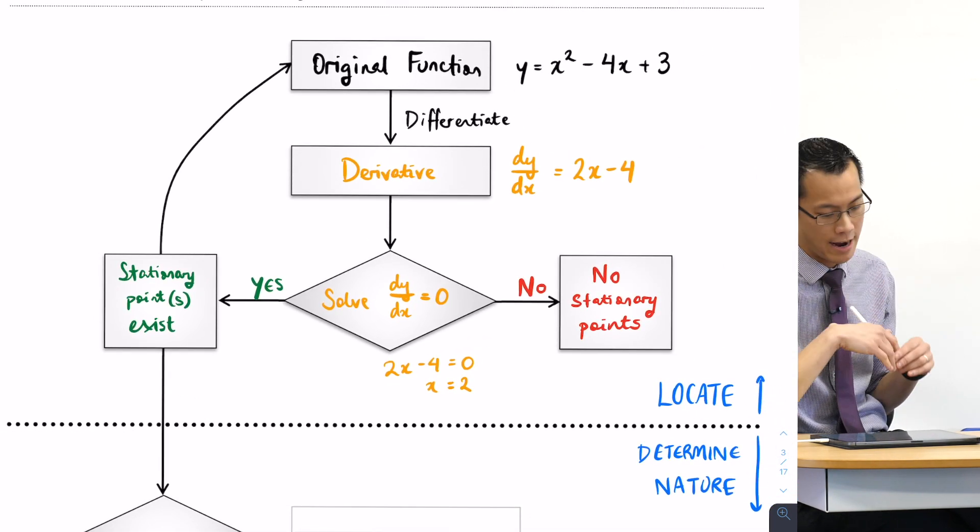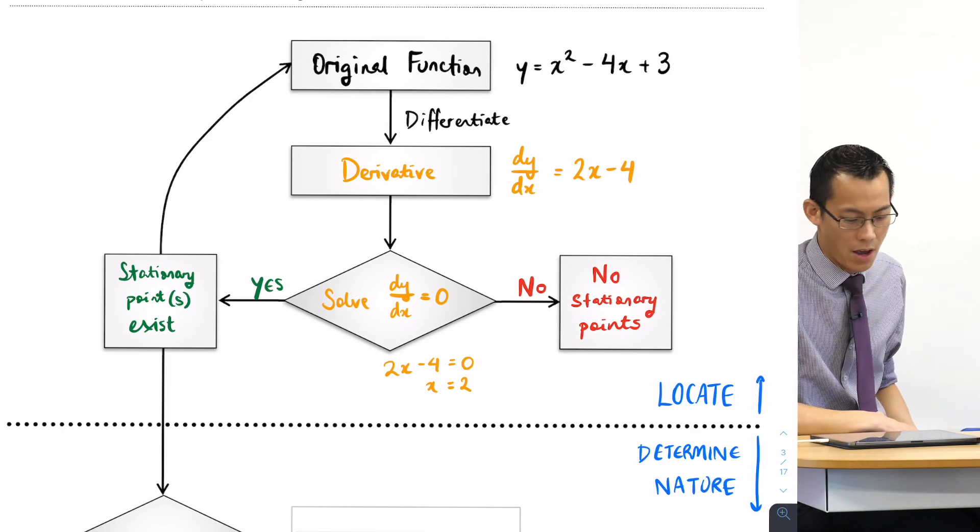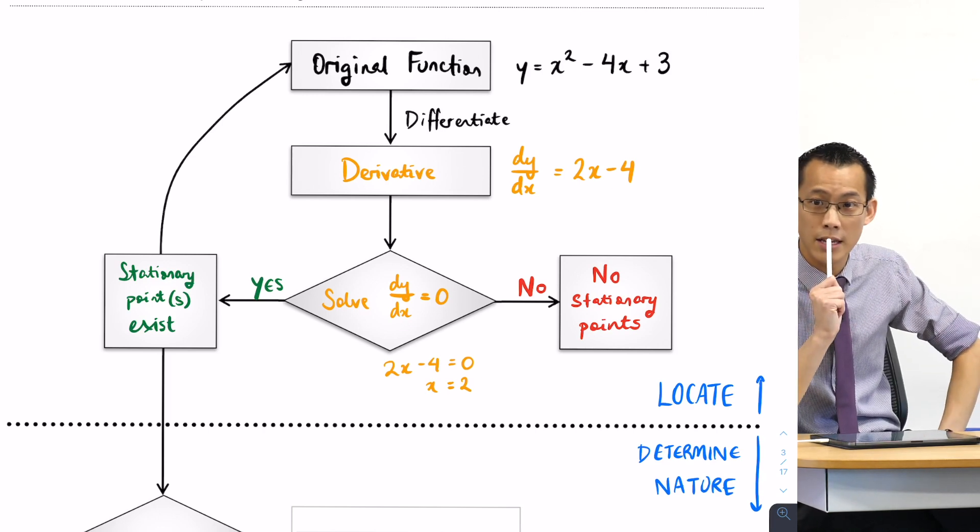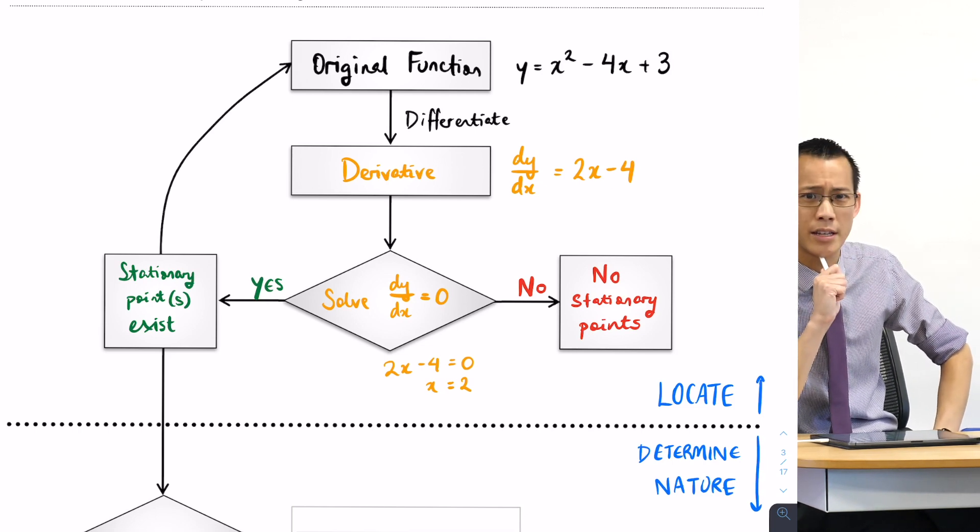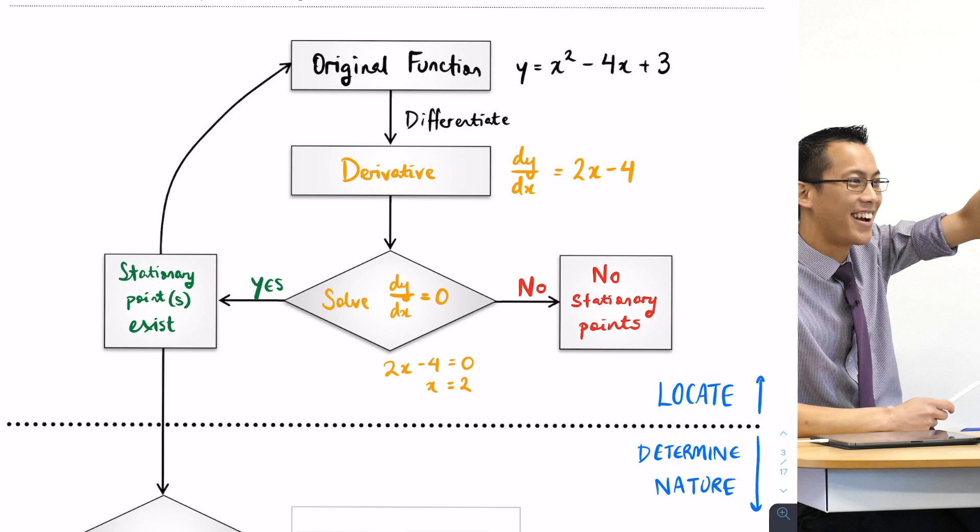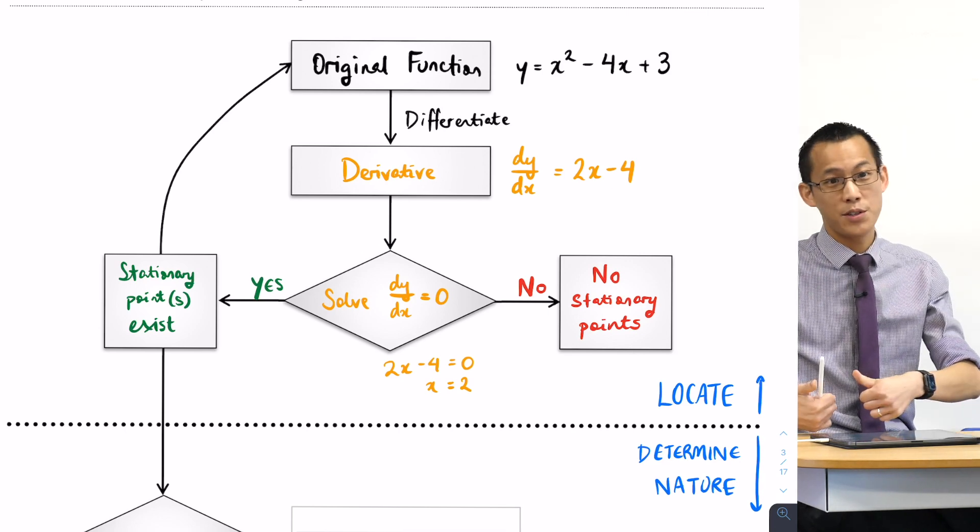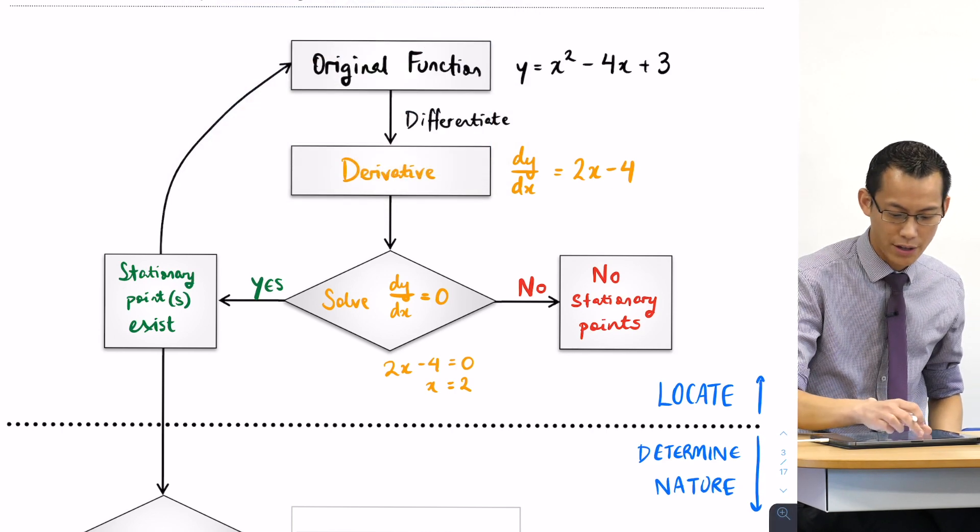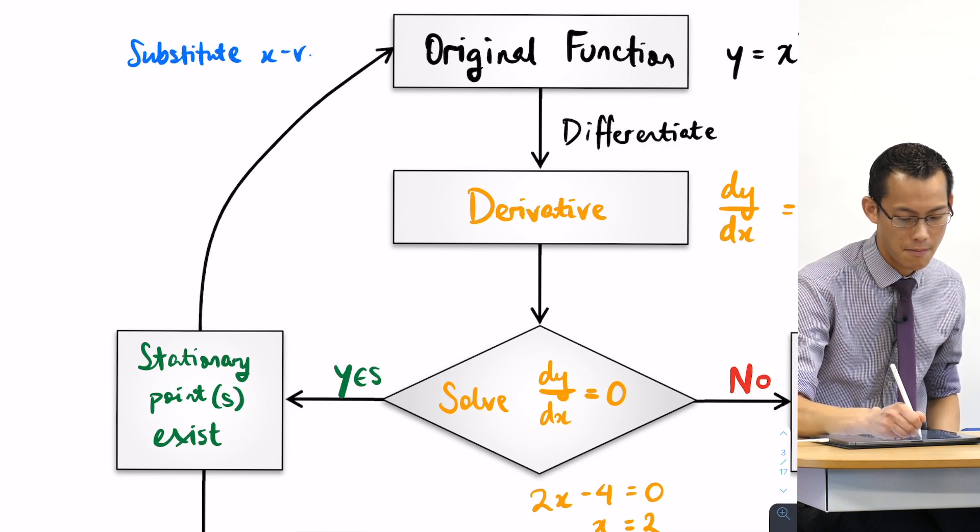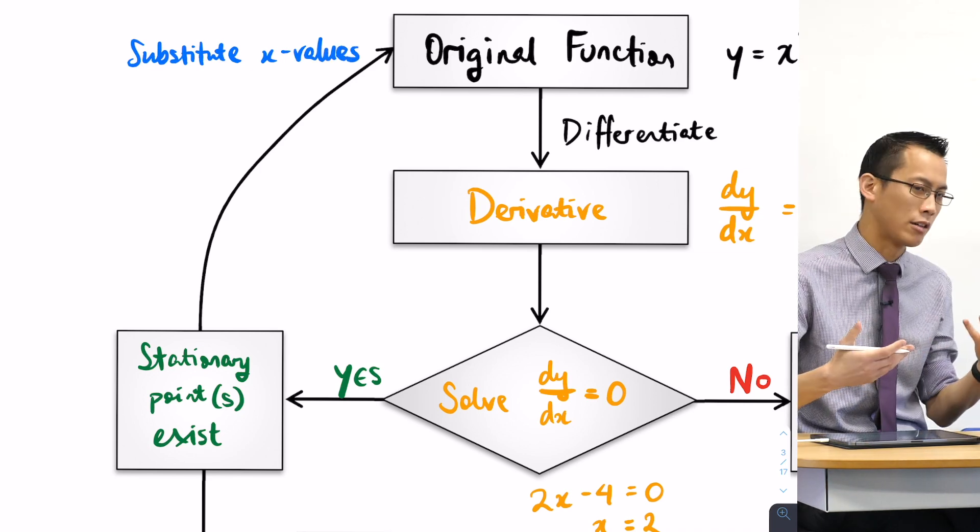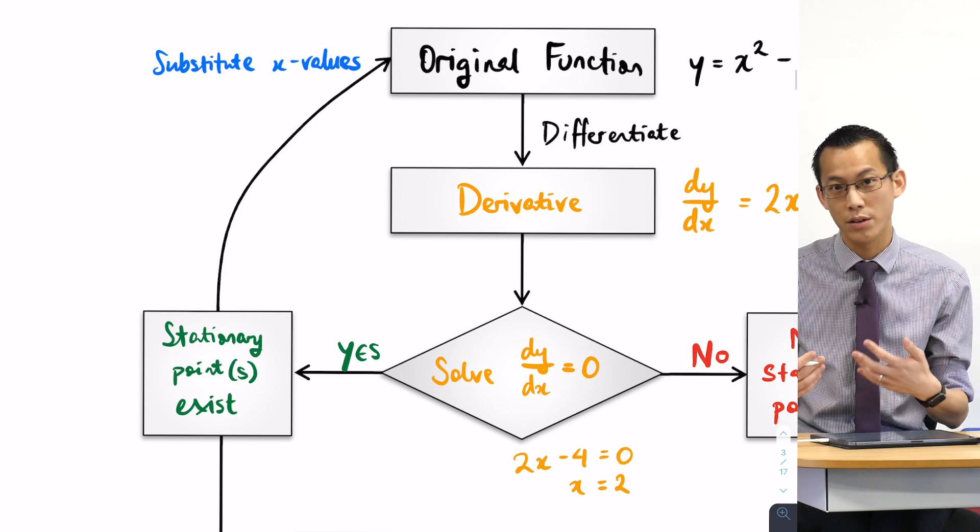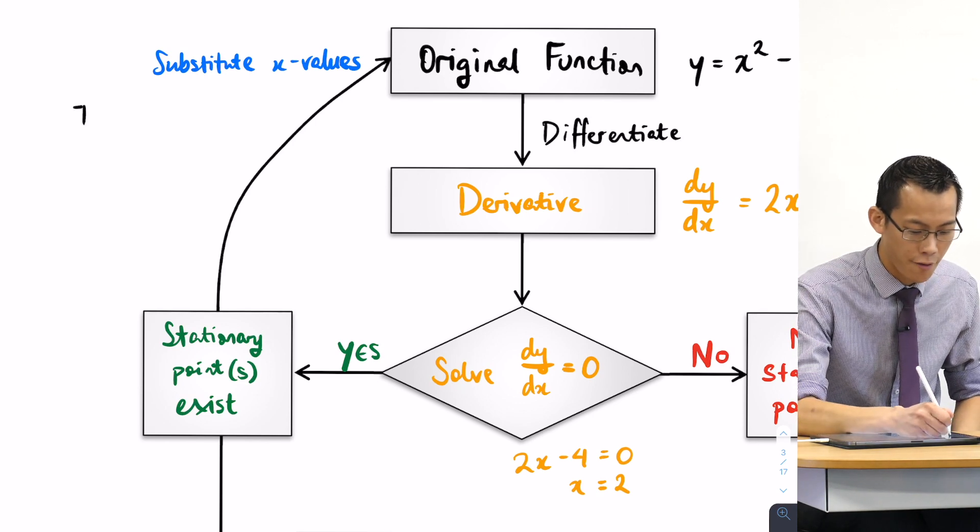Now we're still in the top half, we're still trying to locate. What's the final step in locating a stationary point? That arrow going back up is meant to tell you something. Have a think, why is that arrow heading back up to the original function? I'm going to take this x value and substitute it back into the original function because if I've got an x to find where that stationary point is, I also need a y.